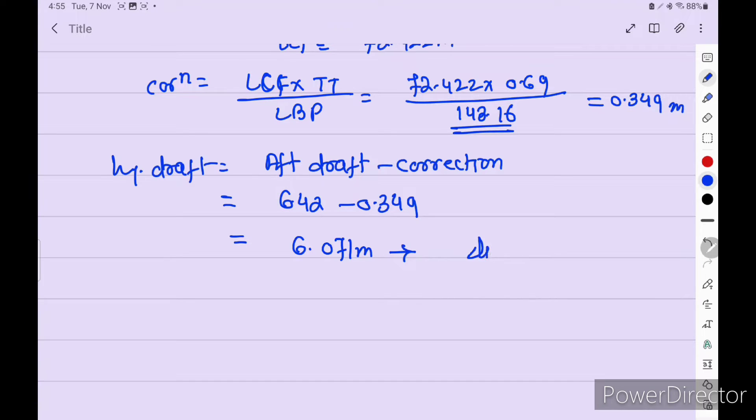So aft draft is 6.42 minus 0.349. So we get 6.071 meter. Now for this draft, we need to find out displacement by interpolation method. Okay. KM and KB. So VCB is equal to KB in the ship particulars.